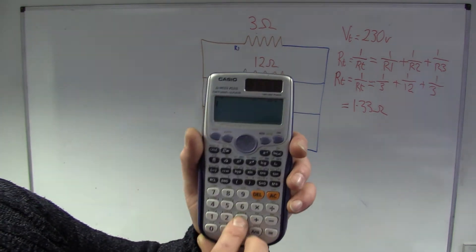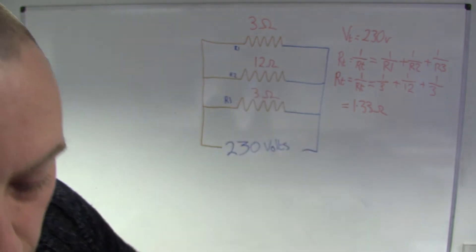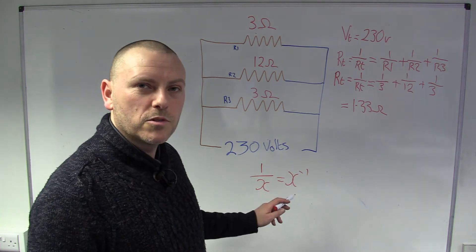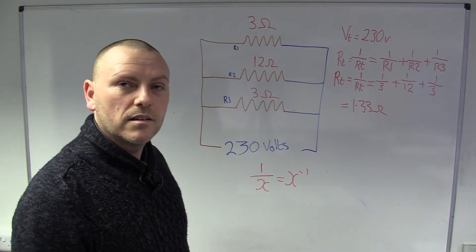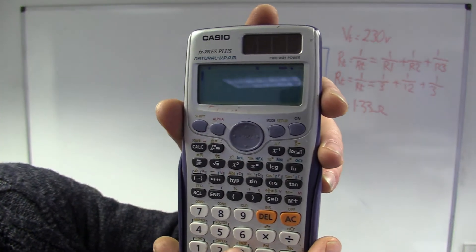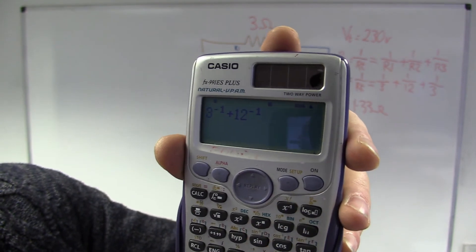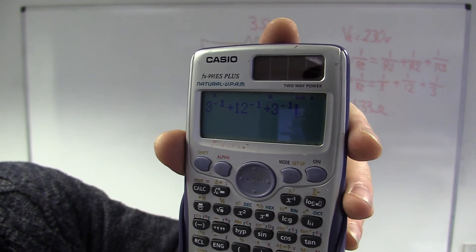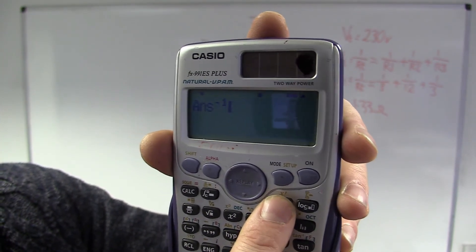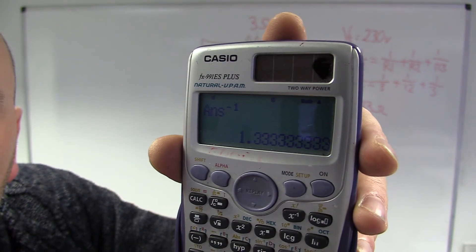There's another way of doing it using the '1 over' button, or x to the minus 1. X to the minus 1 is the same as 1 over x — when you raise something to the power of a negative number, it's the same as it being on the bottom of a fraction. So we press 3, x⁻¹, plus 12, x⁻¹, plus 3, x⁻¹, then equals. Then press x⁻¹ again to flip it, and we get our answer of 1.33 ohms.